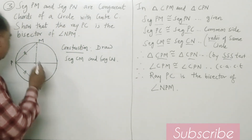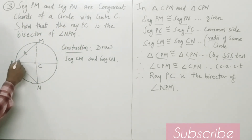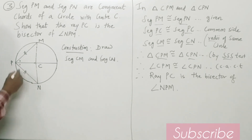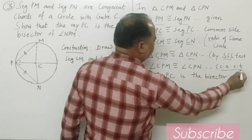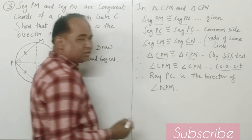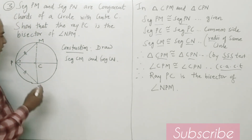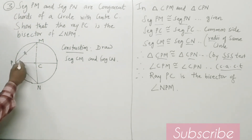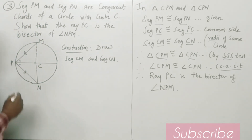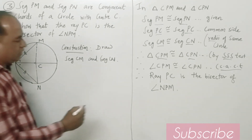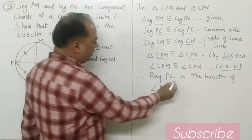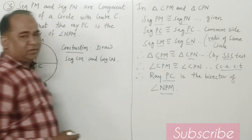Therefore, angle CPM is congruent to angle CPN, as they are corresponding angles of congruent triangles. Since the two triangles are congruent, the remaining parts are also congruent. Therefore, ray PC is the bisector of angle NPM.